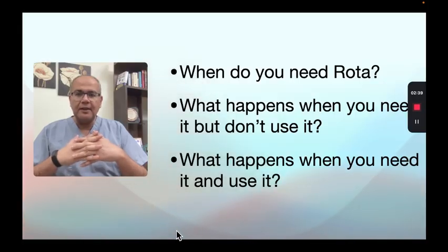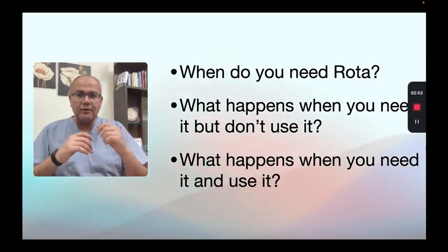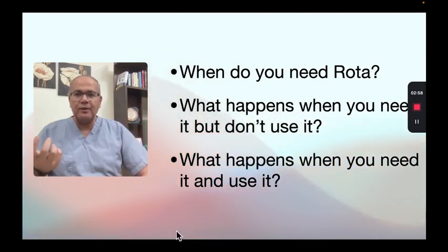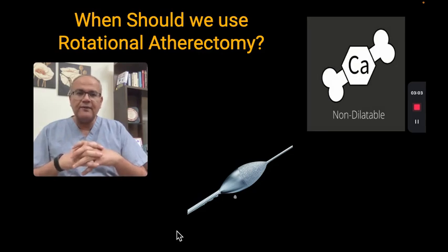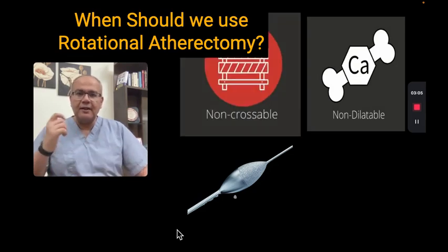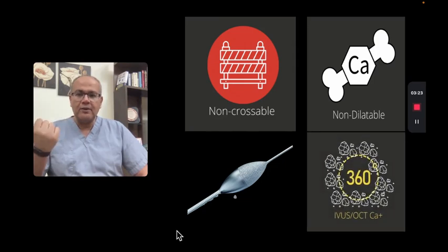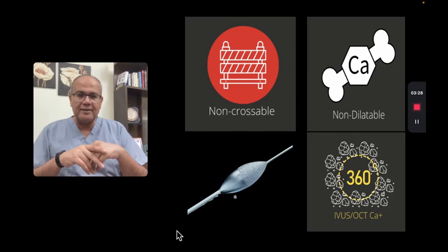In this episode I'll be answering three essential questions: why should we go for rotational atherectomy upfront? What happens when we need upfront rotational atherectomy and we don't use it? And what happens when we need upfront rotational atherectomy and we use it? When should we use rotational atherectomy? There are three classic indications: the non-dilatable lesion when the balloon gets the classic dog boning; non-crossable lesion when the balloon is unable to cross; or when we cross with an imaging device and find circumferential 360 degrees of superficial calcification.